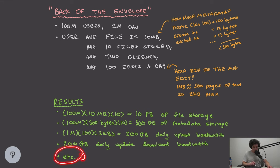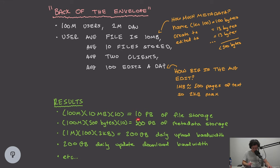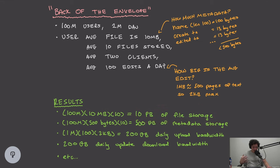There are other useful calculations you can work out here. Note that we're spending 10 petabytes on file storage, which means we need to actually make money on our service. Let's move on to how we're going to handle subscriptions.